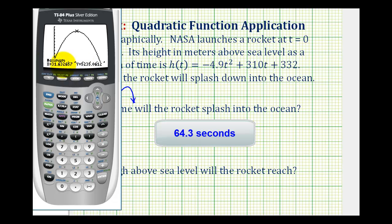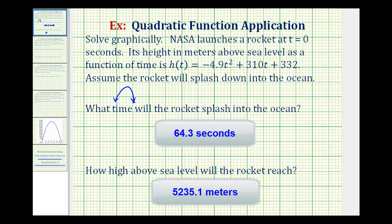So here are the coordinates of the vertex. The question only asks for the height of the rocket, which would be the y coordinate, or approximately 5,235.1 meters. And the x value represents how long it takes to reach that point, which is approximately 31.63 seconds. But again, our question only asks for the height. So here's how we can solve this problem using technology. In the next video, we'll take a look at how we can solve this by hand, using what we know about quadratic functions and quadratic equations.